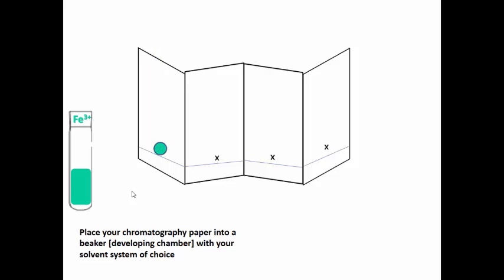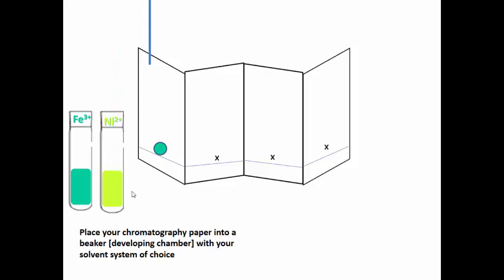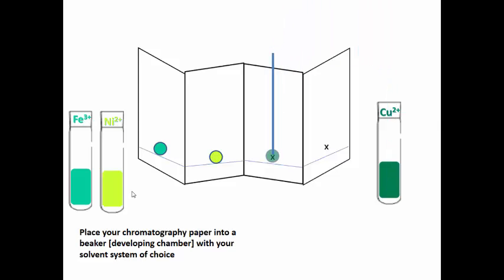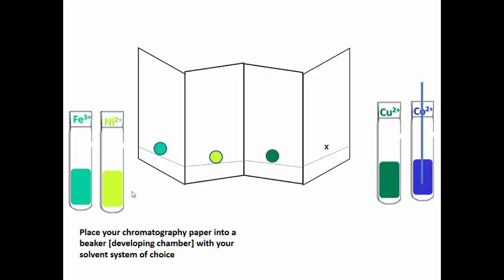Now I have my iron spotted above the one centimeter line. Then I'll bring in nickel and go ahead and spot that on the chromatography paper. Then I'll bring in my copper ions and spot that in the third panel. And then I'll bring in my cobalt ions and go ahead and spot the cobalt onto the chromatography paper.